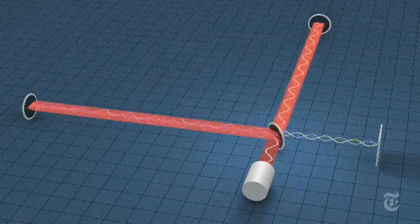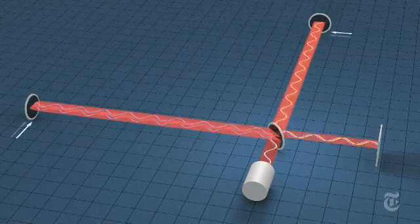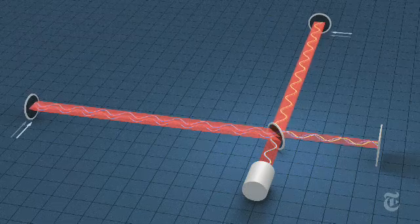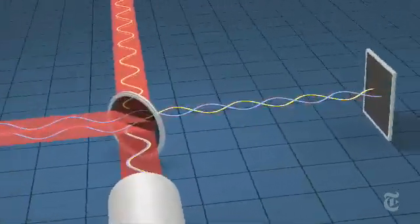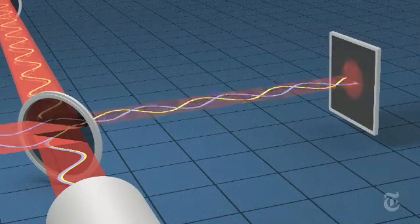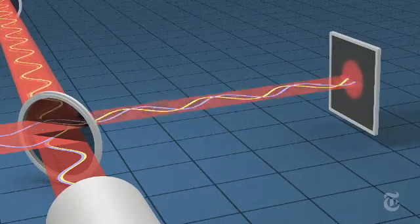But a passing gravitational wave would stretch one arm and squeeze the other. The resulting discrepancy is tiny, a fraction of the width of a proton, but enough to misalign the beams and light up the detector in a rhythmic pattern.